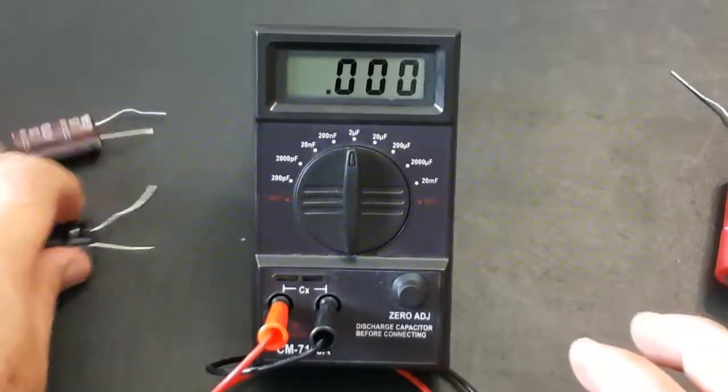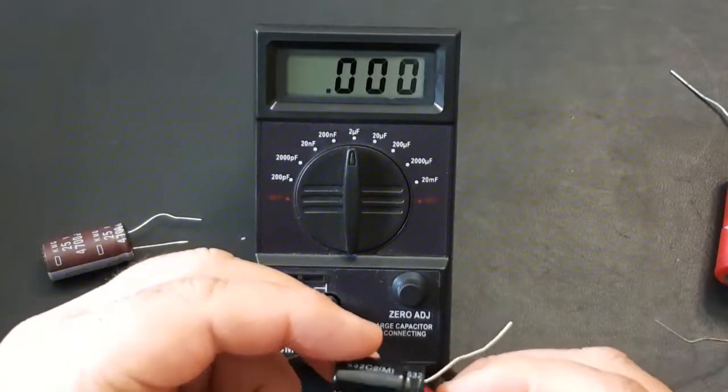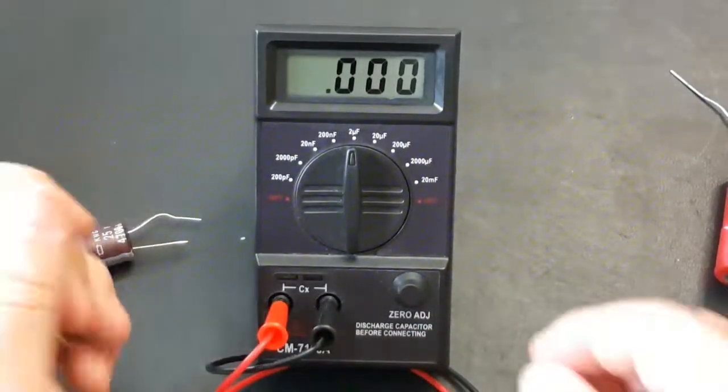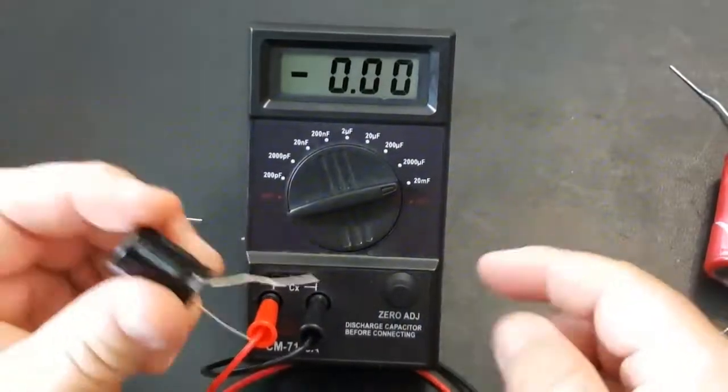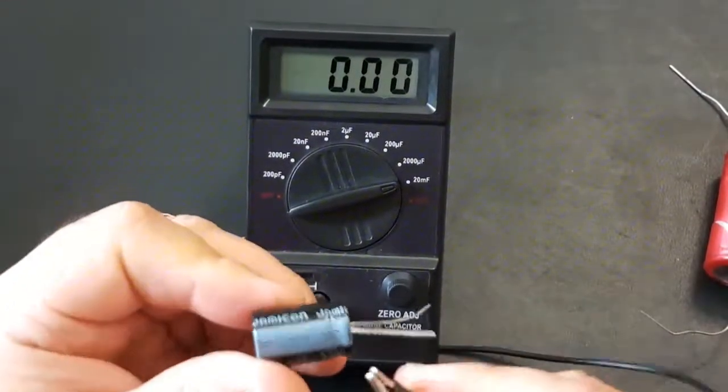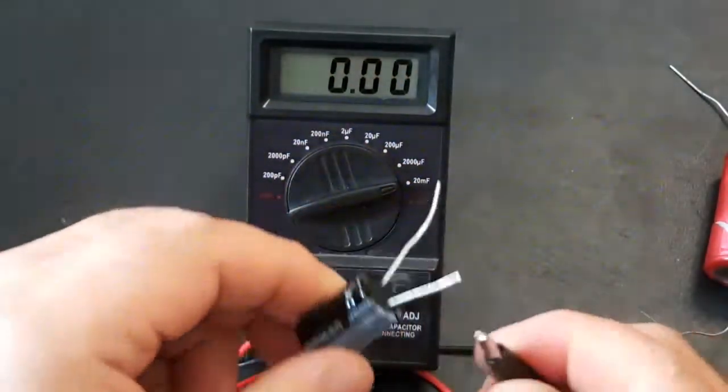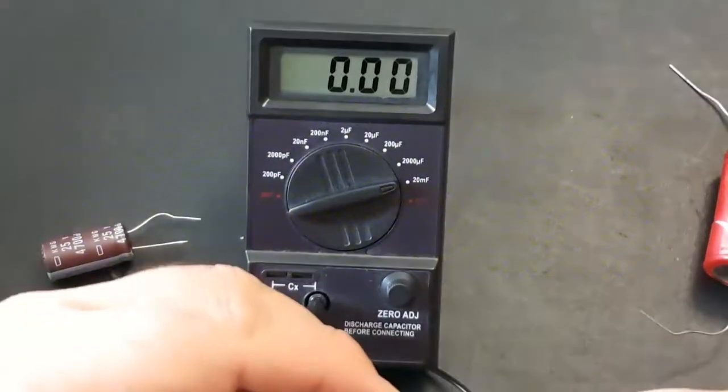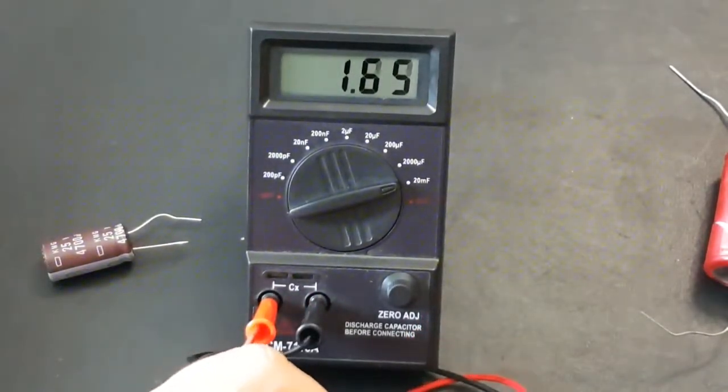Moving up the line. These are more recent capacitors. This is a Gemacom, 35 volt, 2200 microfarad. So now we're going to have to increase, go up to the 20 megafarad range. Now here we have to make sure we have the proper leads attached. All capacitors have an indicator indicating the negative slot. So we attach the black to the negative, the red to the positive. And we should have 2200 microfarad.